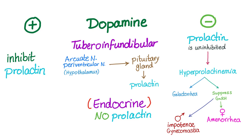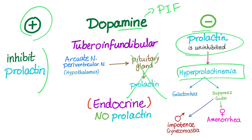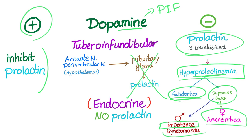Third, the tuberoinfundibular pathway — endocrine function. The arcuate nucleus and periventricular nucleus in the hypothalamus: the pituitary gland will secrete prolactin. If there is dopamine, there is no prolactin — that's why dopamine is also known as prolactin-inhibiting factor. Less dopamine means prolactin is left uninhibited, leading to hyperprolactinemia. Hyperprolactinemia leads to galactorrhea — milk secretion from the nipples. Also, prolactin suppresses gonadotropin-releasing hormone, leading to amenorrhea in females and impotence in males, and gynecomastia in males. Note that impotence in males is analogous to amenorrhea in females — high yield.